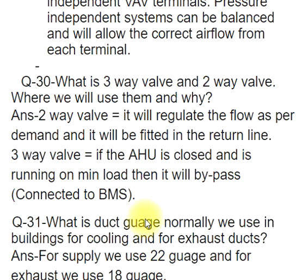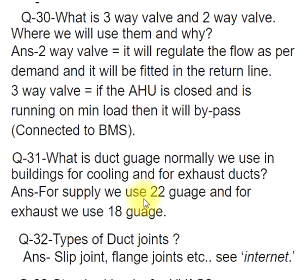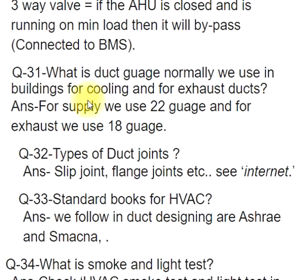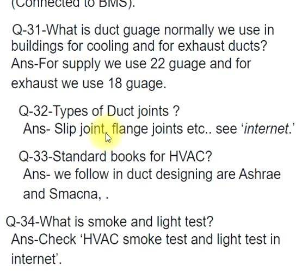Q31: What is the duct gauge normally used in buildings for cooling and exhaust ducts? ANS: For supply we use 22 gauge and for exhaust we use 18 gauge. Q32: Types of duct joints? ANS: Slip joint, flange joints, etc.